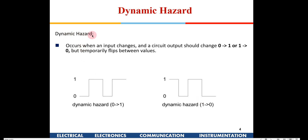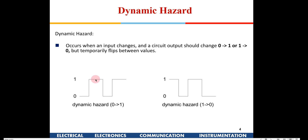A dynamic hazard occurs when the output is changing — for example, from zero to one when an input changes. The desired output should transition cleanly from zero to one, but what is actually observed is the output going zero to one, coming back to zero, and then settling at one. So there is one additional unwanted transition, and this is known as a dynamic hazard.